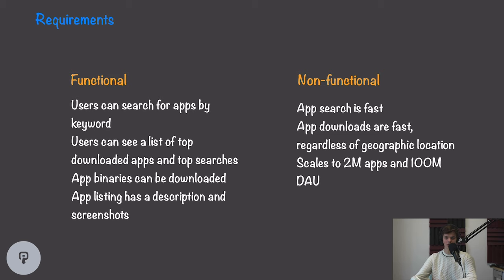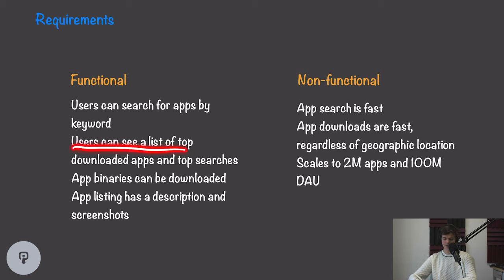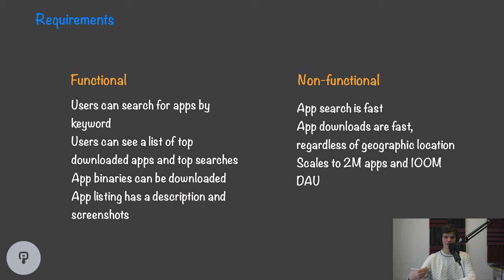Before we dive into the actual design, let's look at some requirements. For functional requirements, we want users to be able to search for an app by keyword — any word present in the name or description should return that app in a list. We also want users to see a list of top downloaded apps and top searches being made by other users. App binaries should be downloadable, and app listings should have descriptions and screenshots.